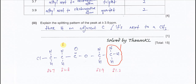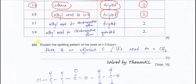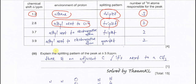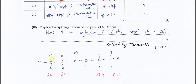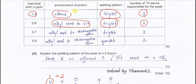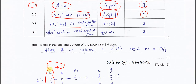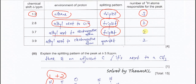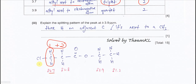For chemical shift 3.7 ppm, this belongs to the CH2 next to the chlorine. We consider this CH2 as one; the adjacent carbon has two protons, so it's 1+2, giving a triplet. It appears at 3.7 ppm because it is next to the electronegative chlorine atom. The environment of the proton is alkyl next to electronegative atom, the splitting pattern is a triplet, and there are two hydrogens responsible for this peak.